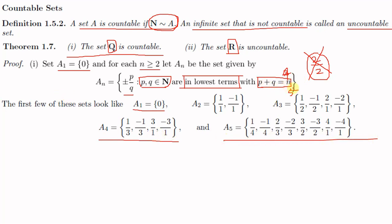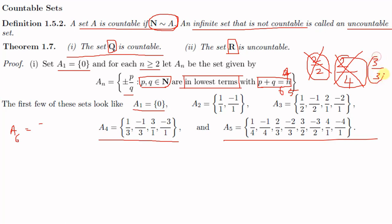For A₆, p + q = 6. We include 1+5 → 1/5 and −1/5. The pairs 2+4, 3+3, and 4+2 are excluded since they are not in lowest terms. The only other valid pair is 5+1 → 5/1 and −5/1. So A₆ = {1/5, −1/5, 5/1, −5/1}. This is how we define the sets Aₙ.